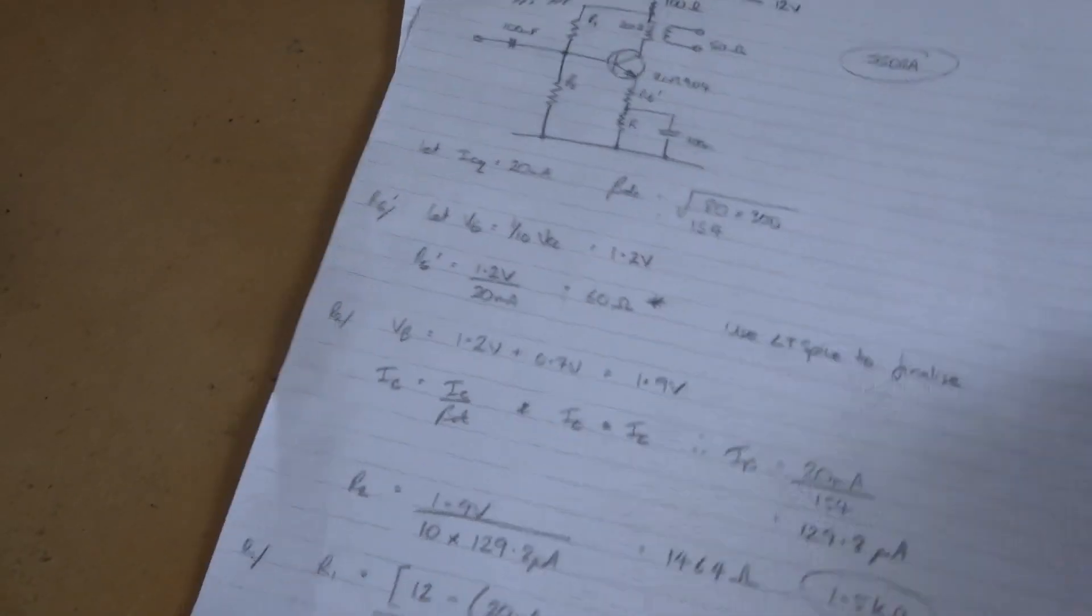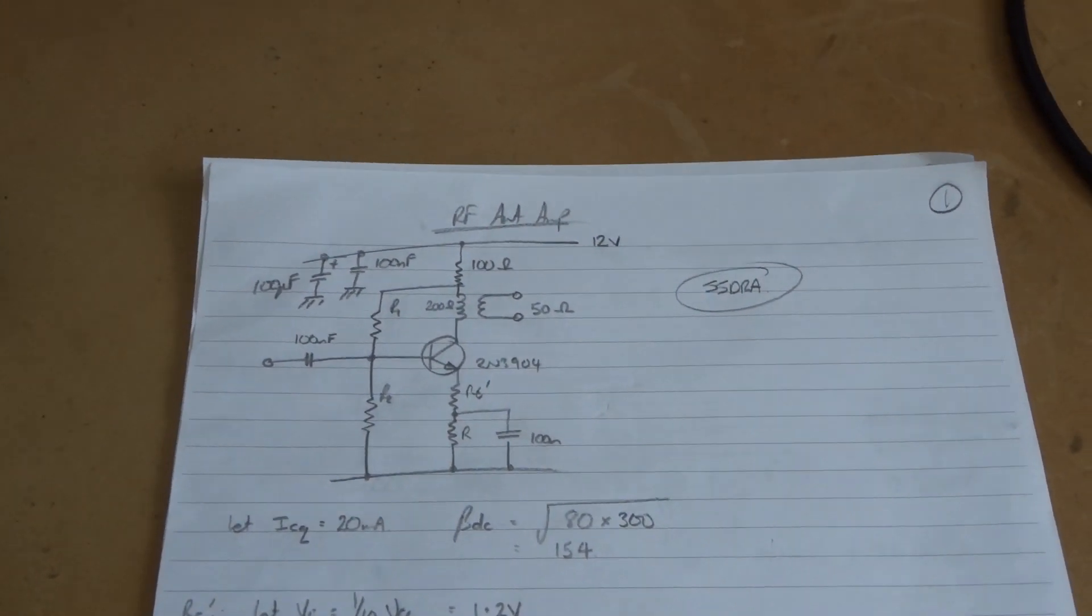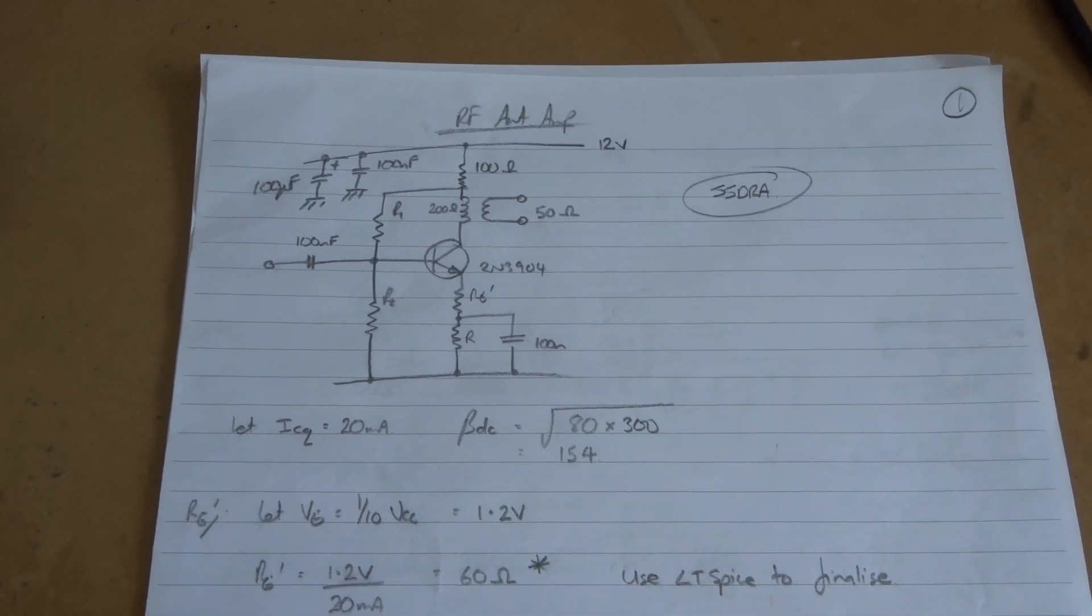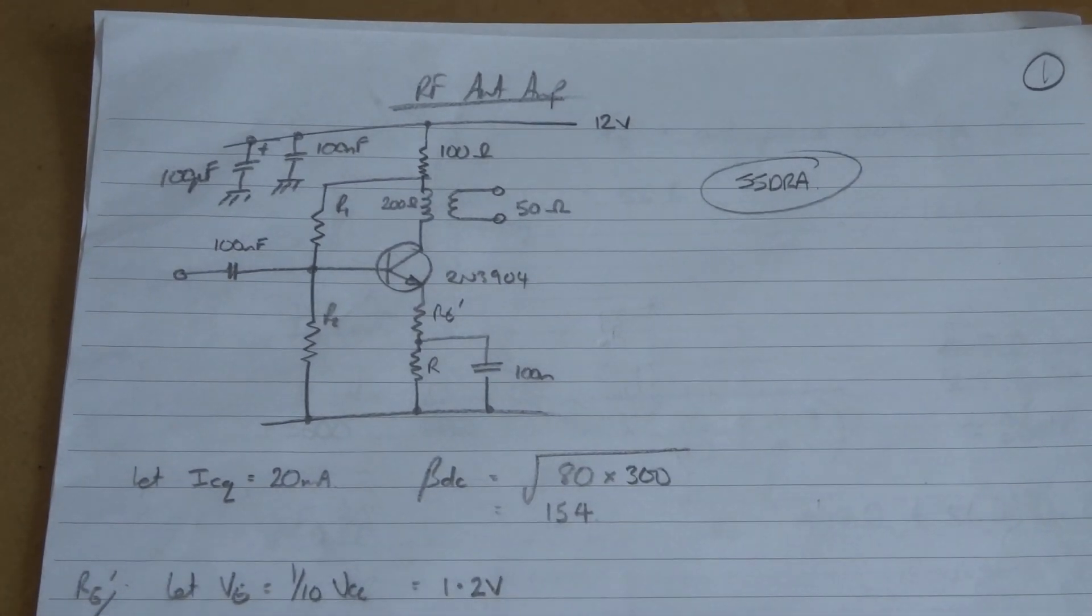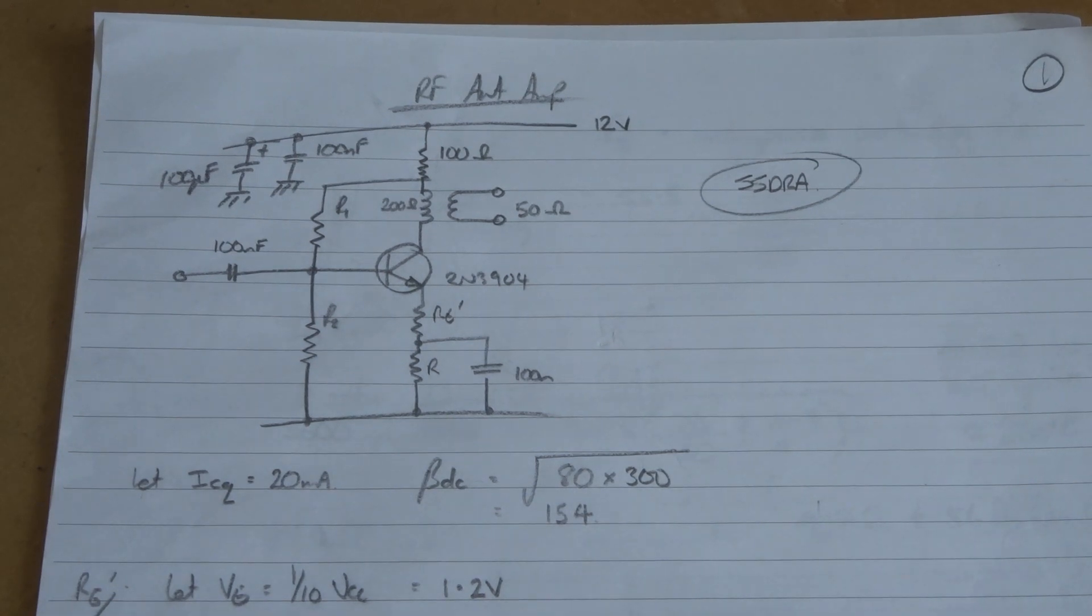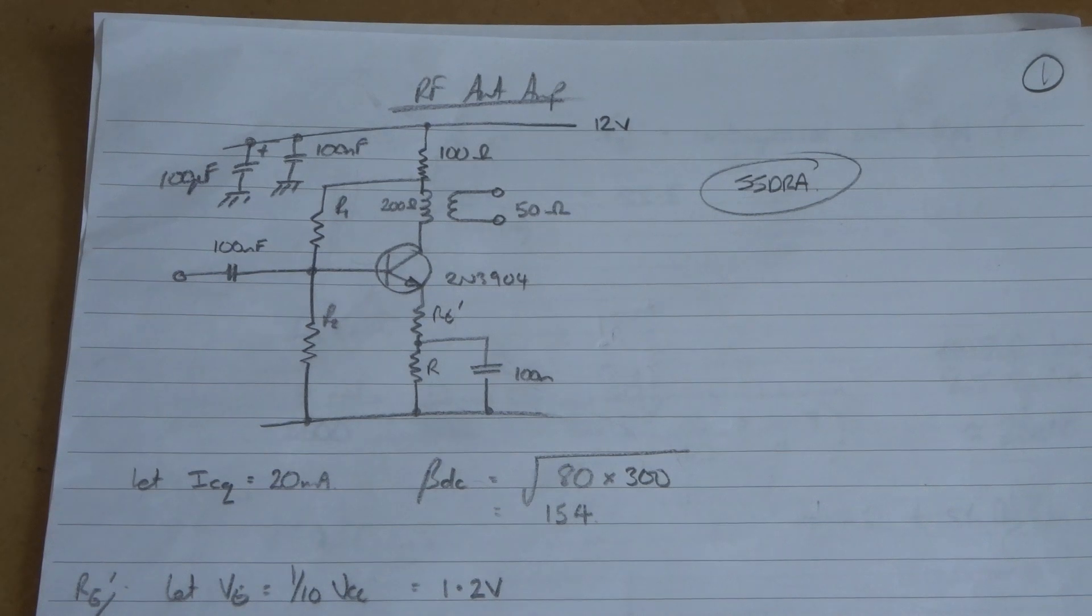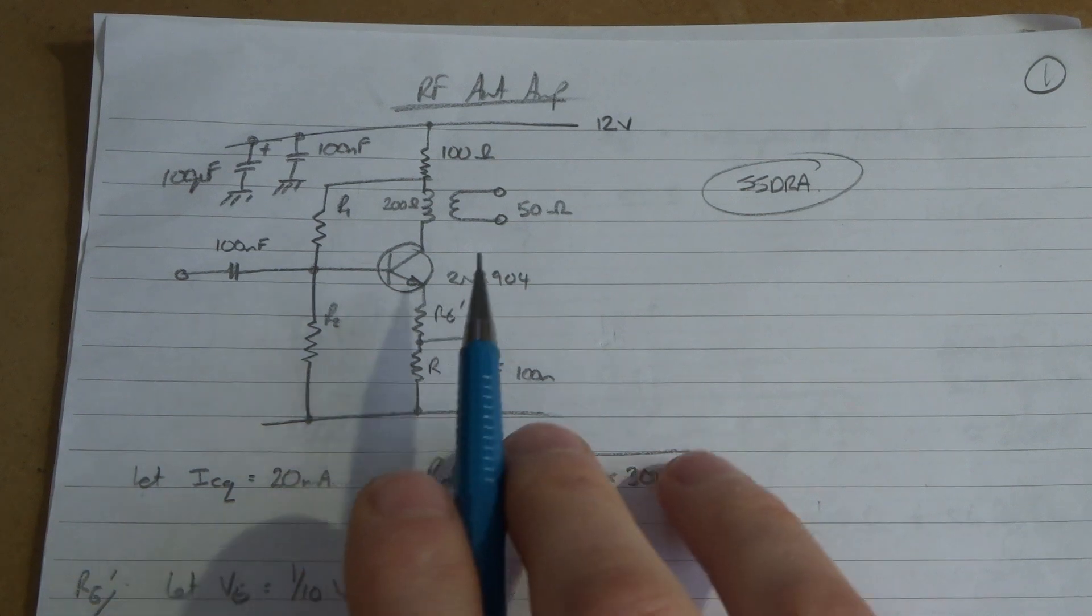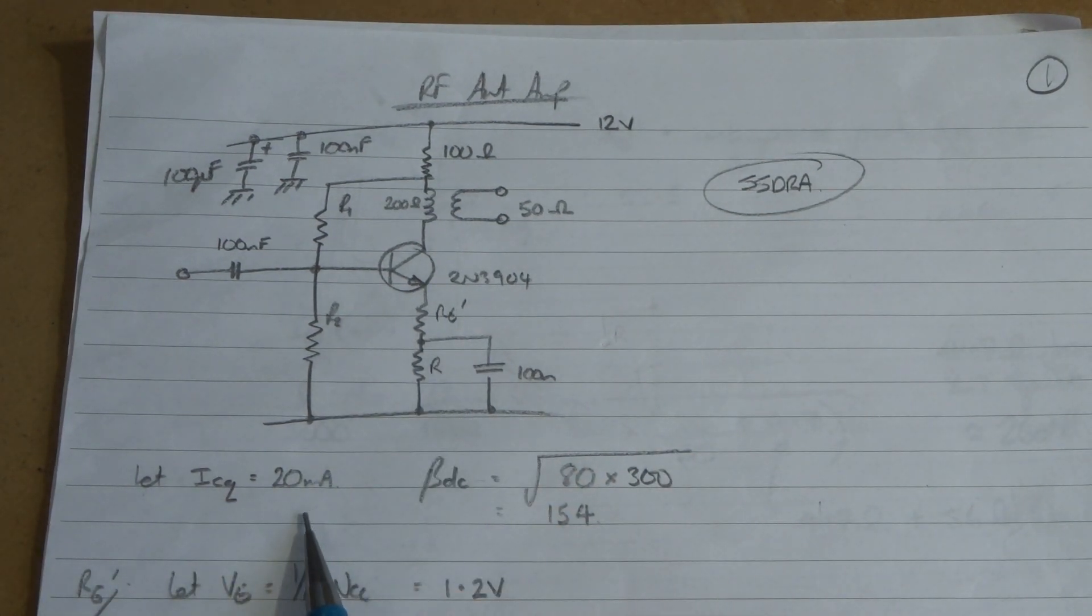The approach I took was to look through the solid state design for the radio amateur book and see what they were talking about regarding RF amplifiers and BJTs for the front end. The approach they discussed was to use a bit of negative feedback and set the quiescent current for 20mA.